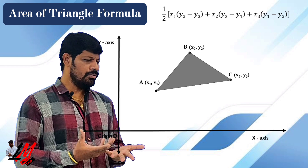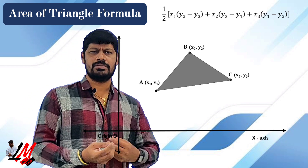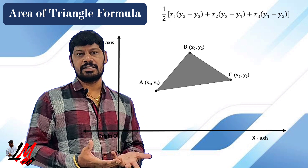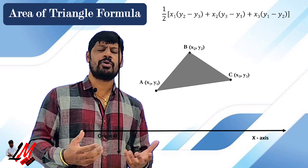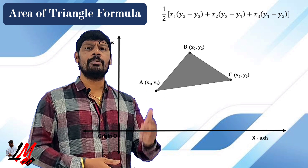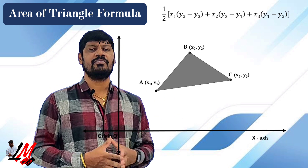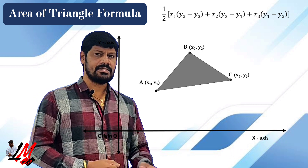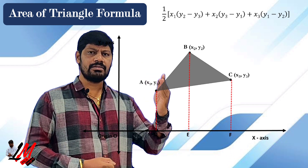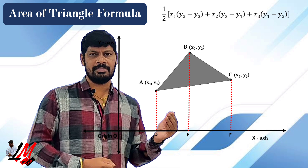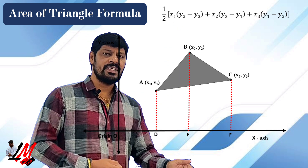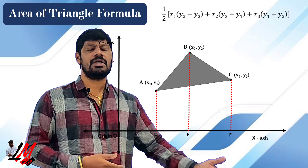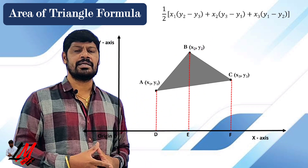We are supposed to find the area of this triangle in terms of x1, y1, x2, y2, x3, y3. As we have done derivations in coordinate geometry for section formula and distance formula, all three derivations follow a similar approach. Here we drop perpendiculars to the x-axis. From A we drop a perpendicular and get point D; from B we drop a perpendicular and get point E; from C we drop a perpendicular and get point F.